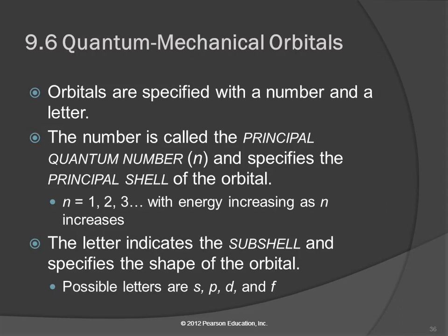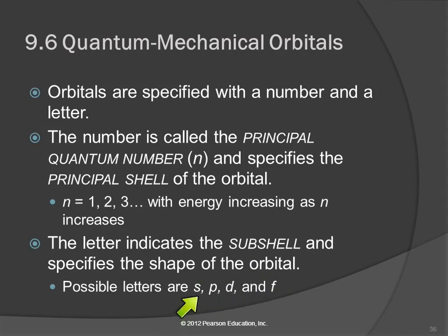There's also a letter that specifies the subshell — a subcategory within that principal shell — and this tells us the shape of the orbitals. The possible letters are S, P, D, and F. These have historical significance, which is why they're not just A, B, C, D. P is principal, D is diffuse, F is fine — these related to characteristics of lines seen in the emission spectrum of hydrogen.